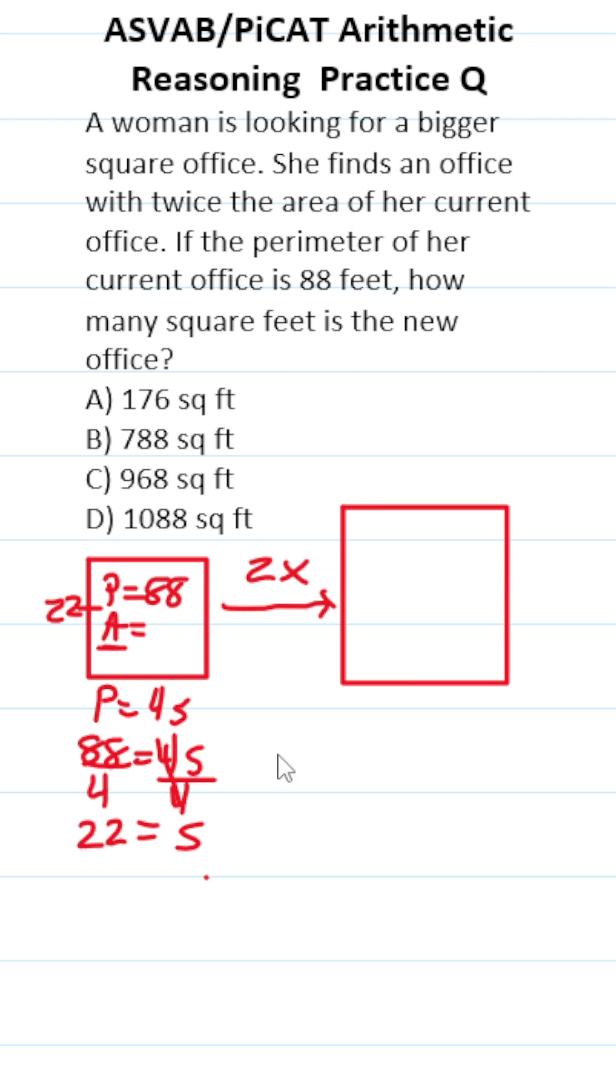How do you find the area of a square? The area of a square is side times side. In this case, we now know that S is 22, so this becomes area equals 22 times 22.